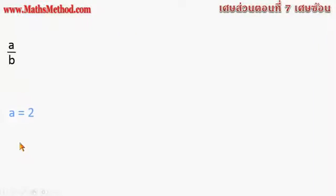ส่วน B เป็นเสร็จส่วน ถ้า A เท่ากับ 2 และ B เท่ากับ 3 แทน A ด้วย 2 และแทน B ด้วย 3 จะได้เสร็จ 2 ส่วน 3